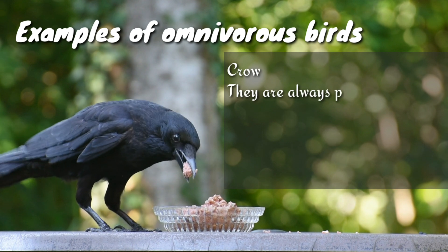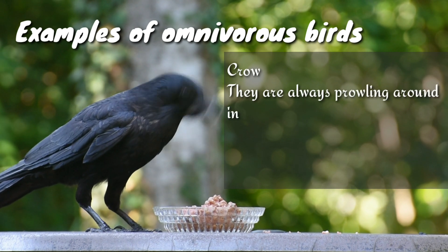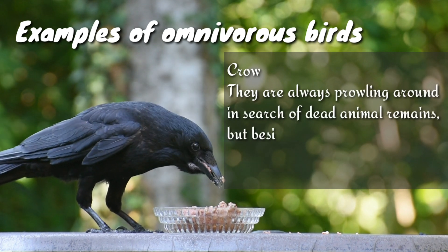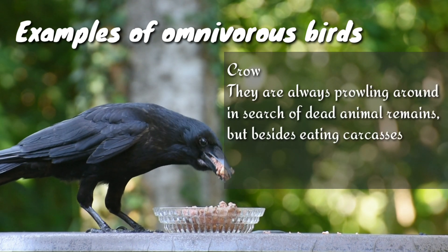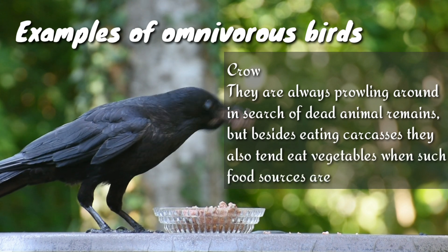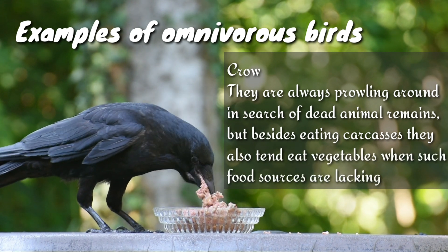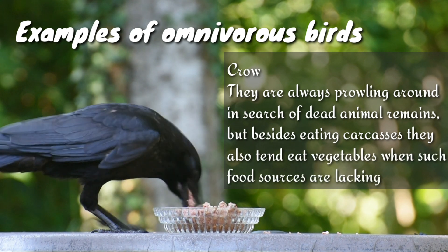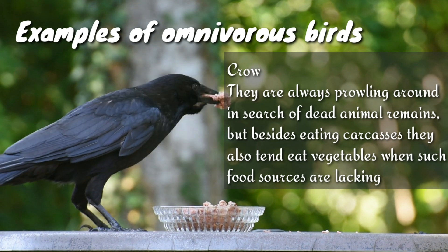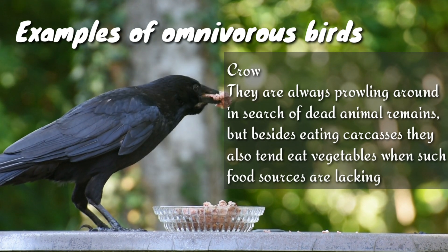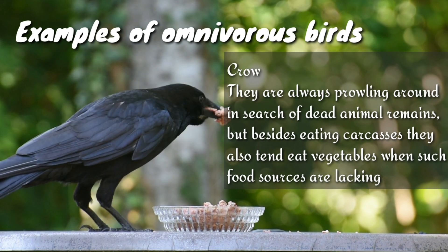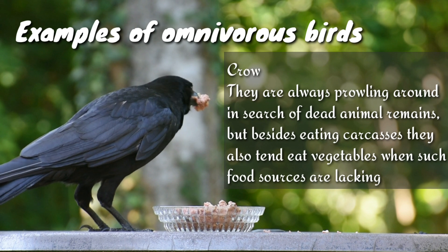Examples of omnivore birds include the crow. Crows are always prowling around in search of dead animal remains, but besides eating carcasses, they also tend to eat vegetables when such food sources are lacking.